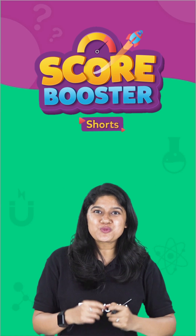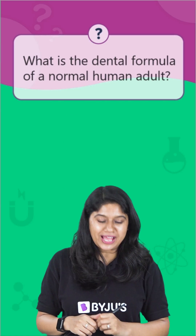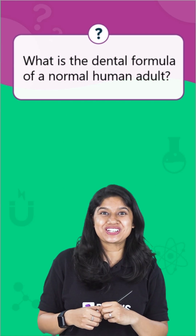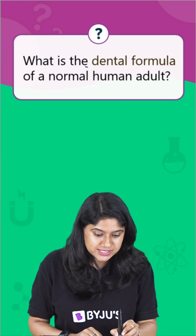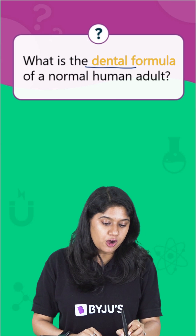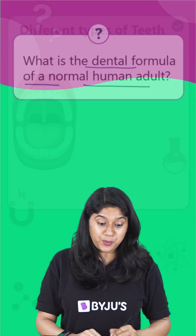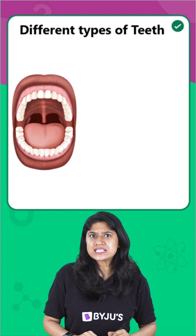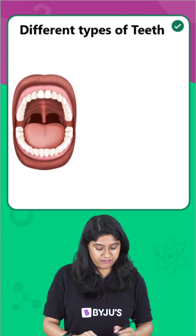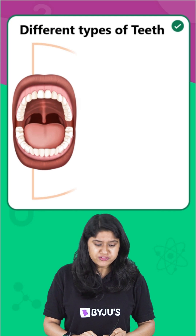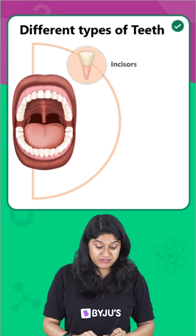Hi there, it's score booster time. Let's quickly take a look at this particular question. The question is: what is the dental formula of a normal human adult? This question will be discussing the different types of teeth we have. We have different types of teeth, so let's quickly take a look at them.